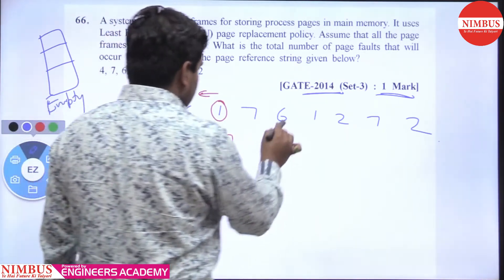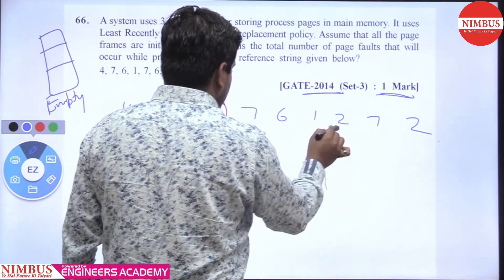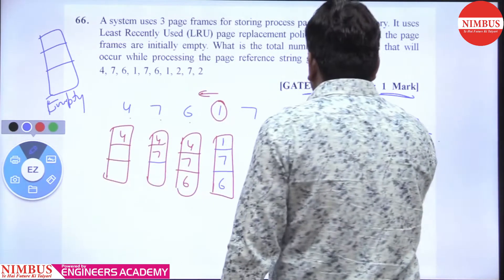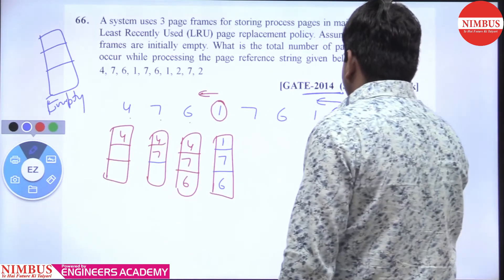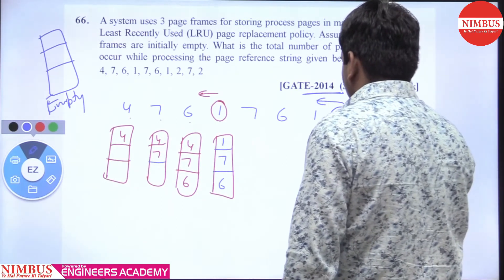7 is present, 6 is present, 1 is present. When 2 causes a page fault, we see in reverse direction: 1, 6, and 7. So 7 is replaced by 2.